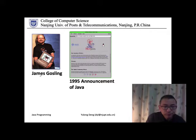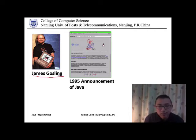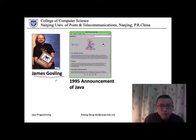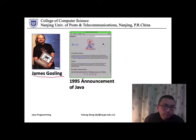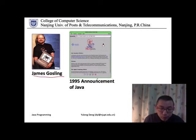The guy's name is James Gosling — a very smart and brilliant guy. As a member of the Green Team, he worked very hard, solved a lot of problems during development, and wrote a lot of code for the very first version of the programming language. So today, we give him the name 'the father of Java.' In 1995, the team members announced the birth of Java.